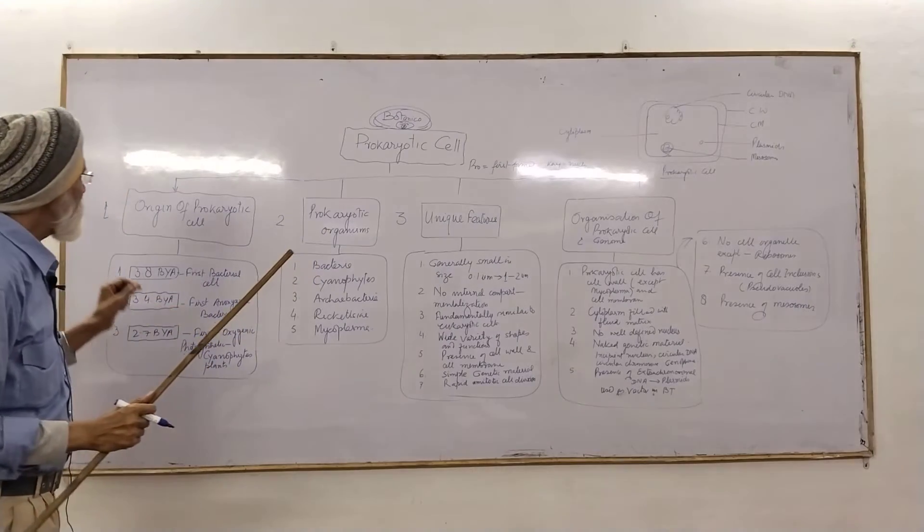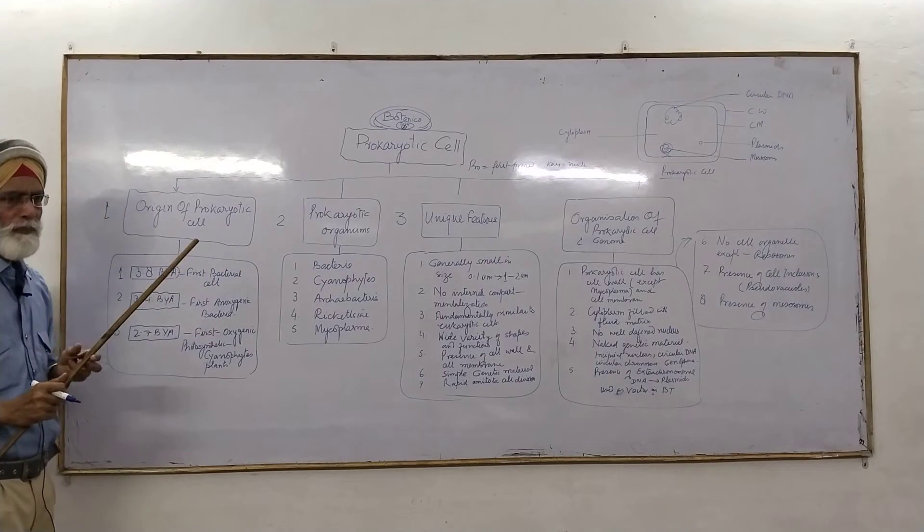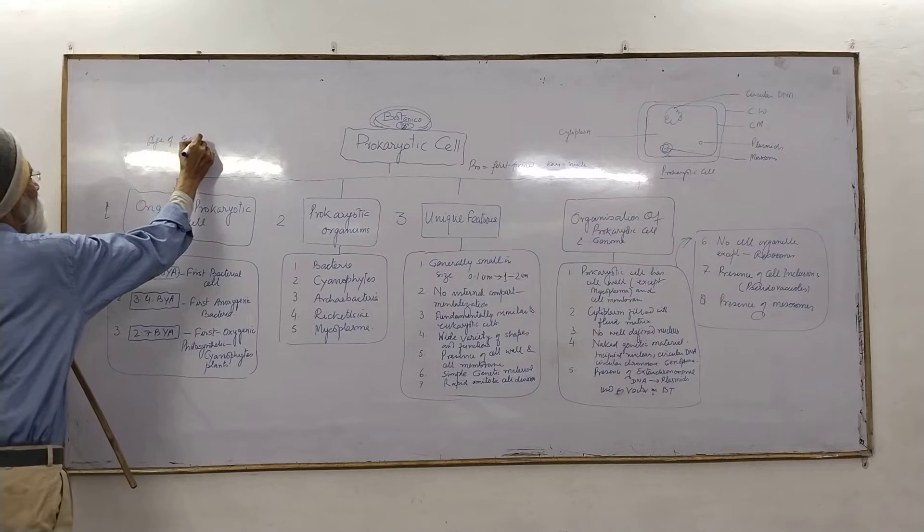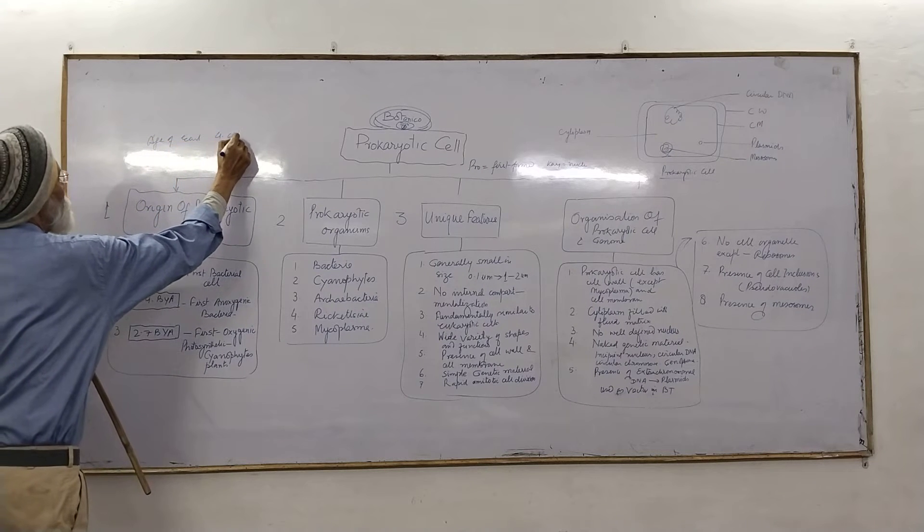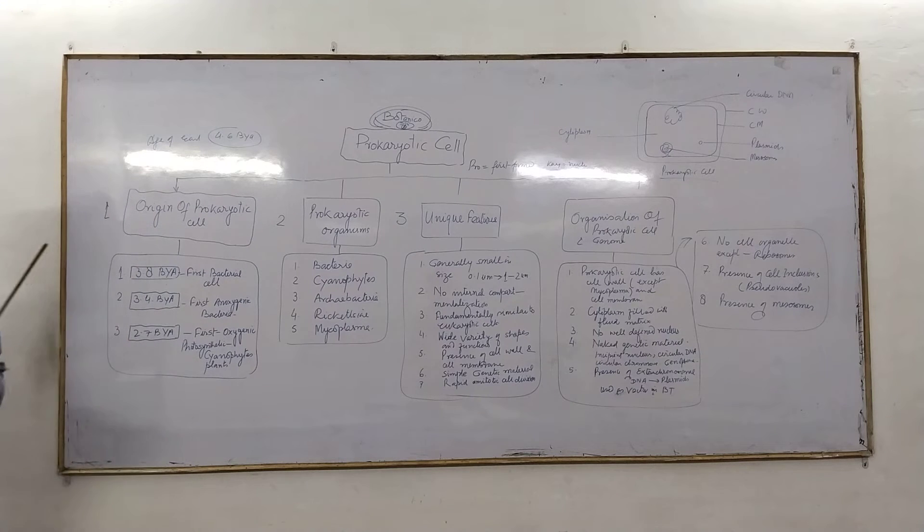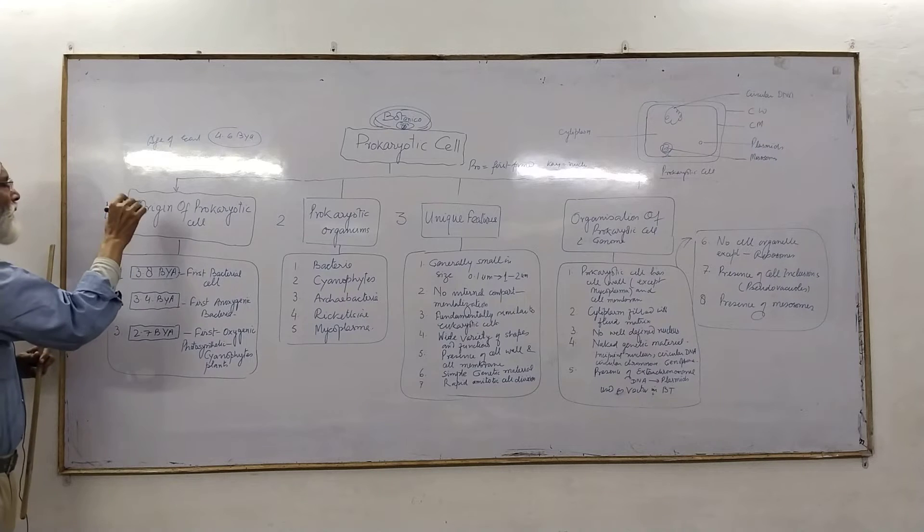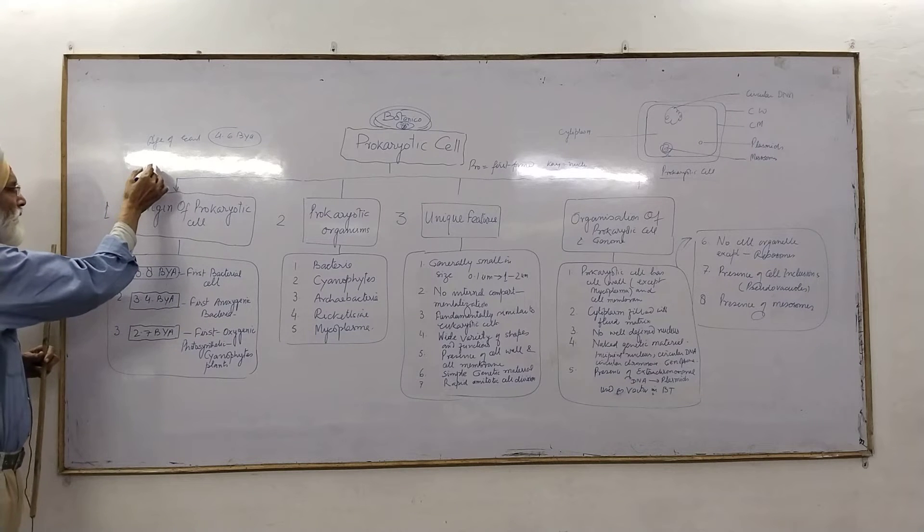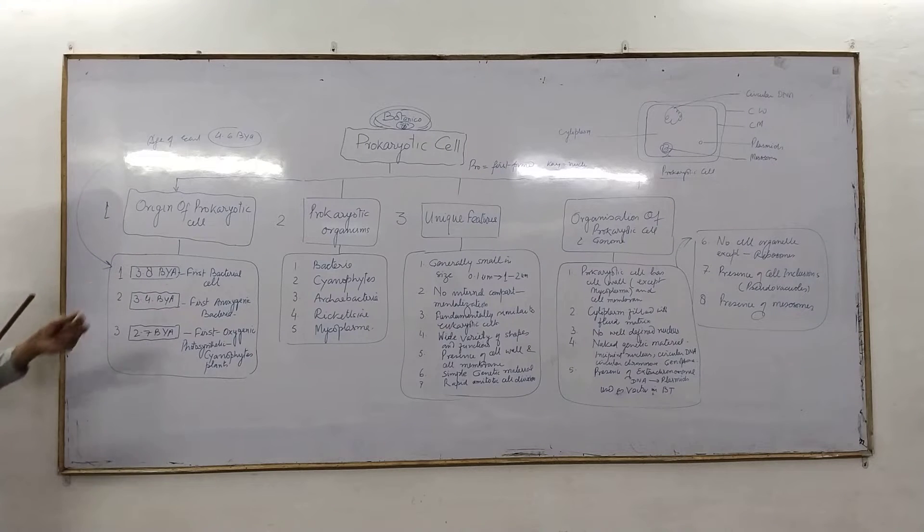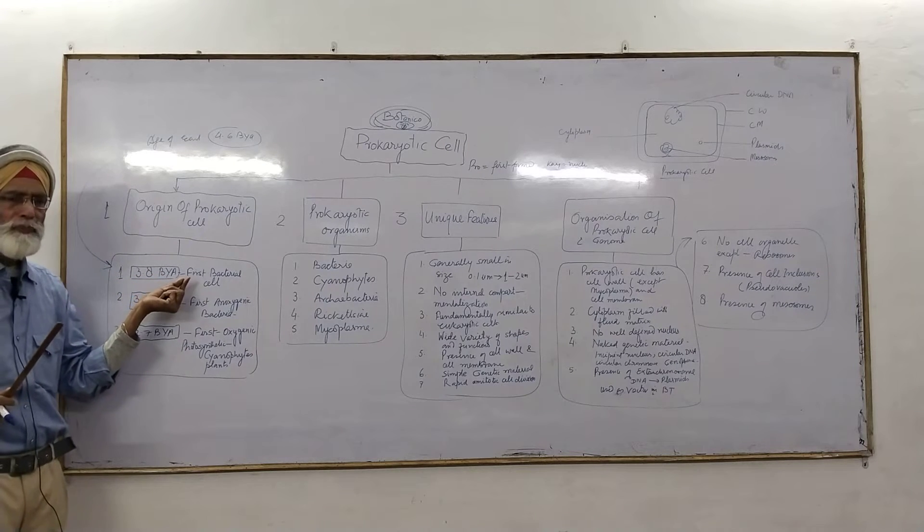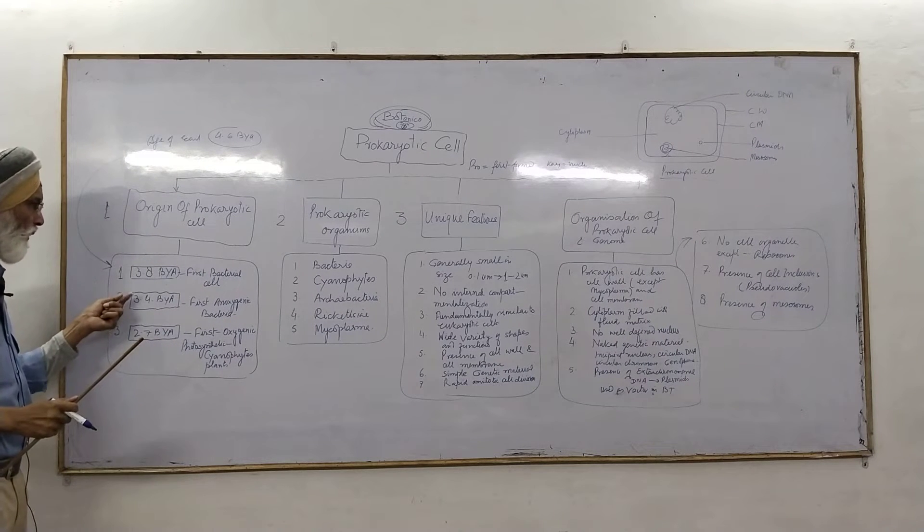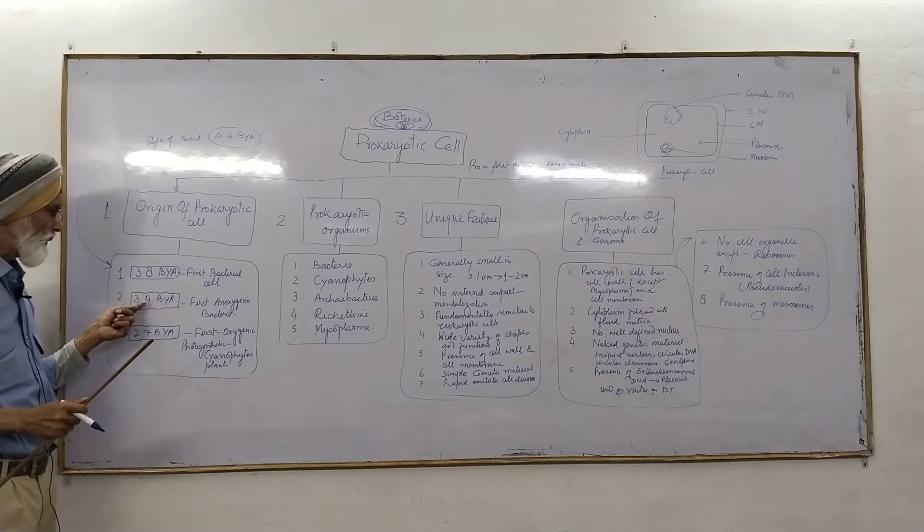The origin of prokaryotic cells. The age of the earth, 4.6 billion years ago. And cell, after the origin of life, came into existence at what time? 3.8 billion years ago, the first bacteria-like cell appeared on the earth. And then again, it took a long time, 0.4 billion years.